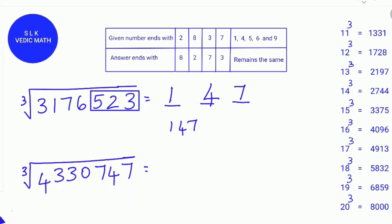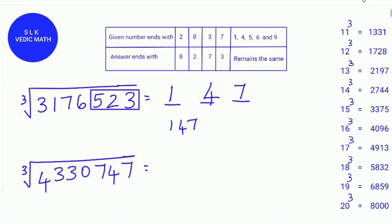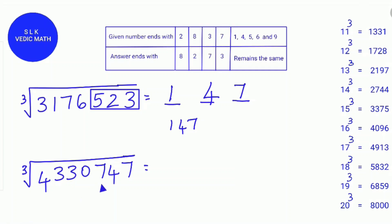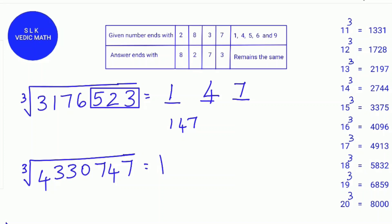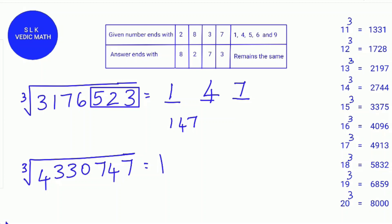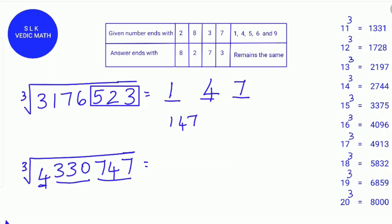Let's try another example: the cube root of 4,330,747. First, find the digital root of 4,330,747. 4 plus 3 is 7, plus 3 is 10, plus 7 is 17, plus 4 is 21, plus 7 is 28, and 2 plus 8 is 10, and 1 plus 0 is 1. So the digital root of 4,330,747 is 1. Since a number's digital root is 1, 8, or 9, 4,330,747 is a perfect cube. Finding groups: 7, 4, 7 form one group; 3, 3, 0 form another; and 4 by itself is a group — 3 groups in all, so the answer will be a 3-digit number.